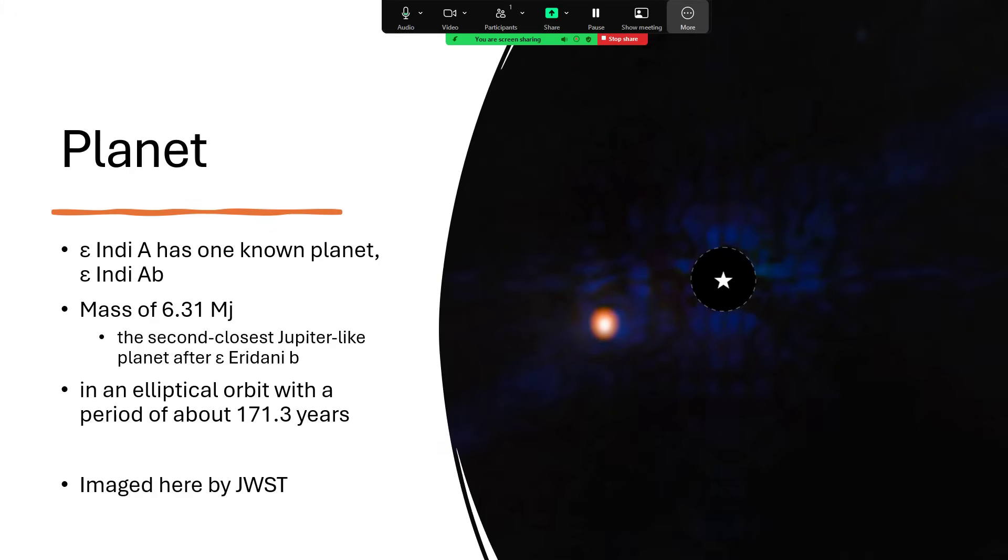Epsilon Indi A also has a planet, so this is called Epsilon Indi A lowercase b, and this is a super Jupiter. It has a mass of 6.31 times the mass of Jupiter, so not massive enough yet to really be classed as a brown dwarf. It would have to be about 13 Jupiter masses to make one of those Y-class smallest brown dwarfs, but nevertheless quite a monster. This actually makes it the second closest Jupiter-like planet to the solar system. The record holder is currently planet b in orbit around Epsilon Eridani. There's a once-around talk about Epsilon Eridani, which I recommend you go and have a look at.